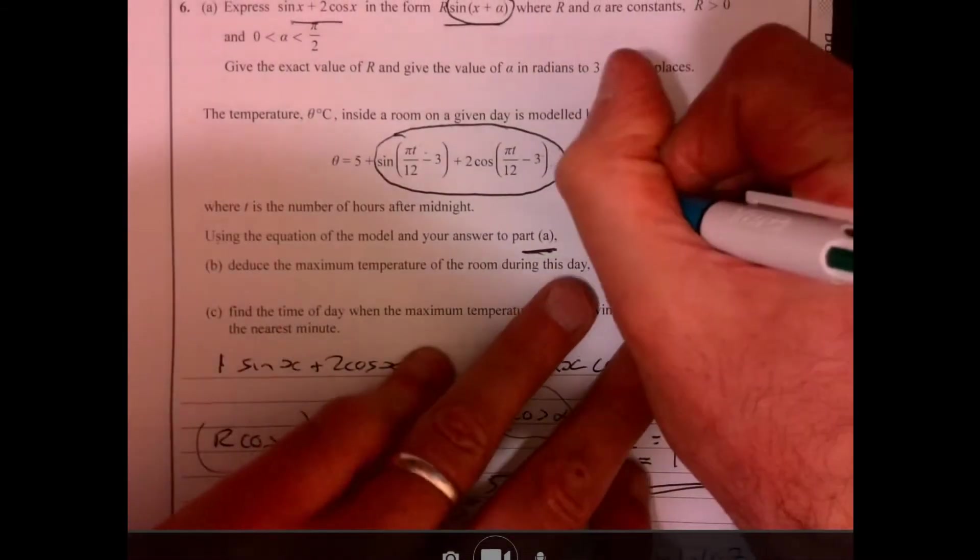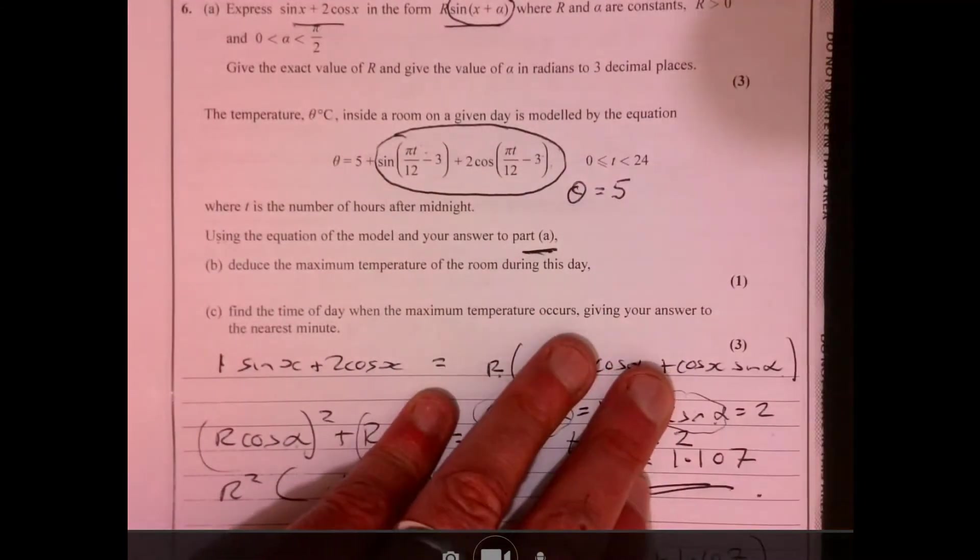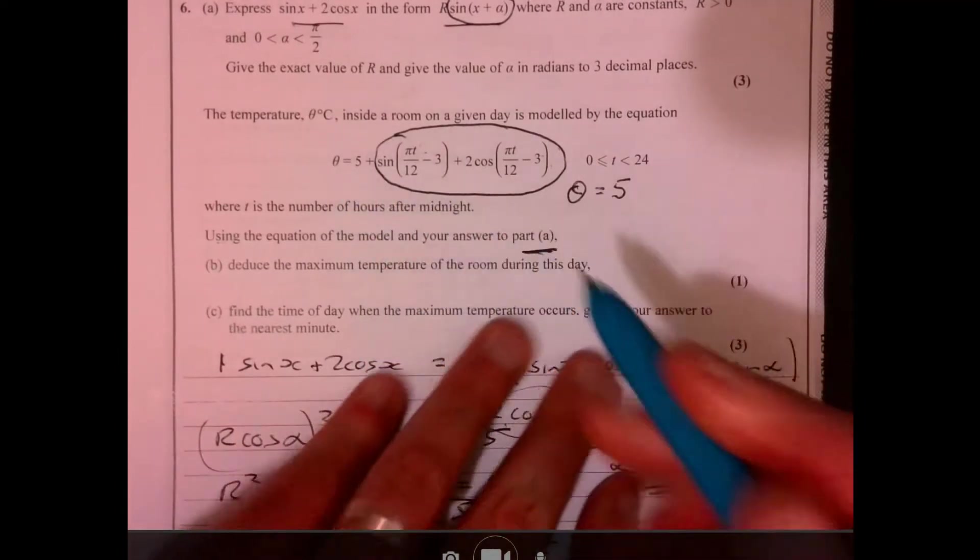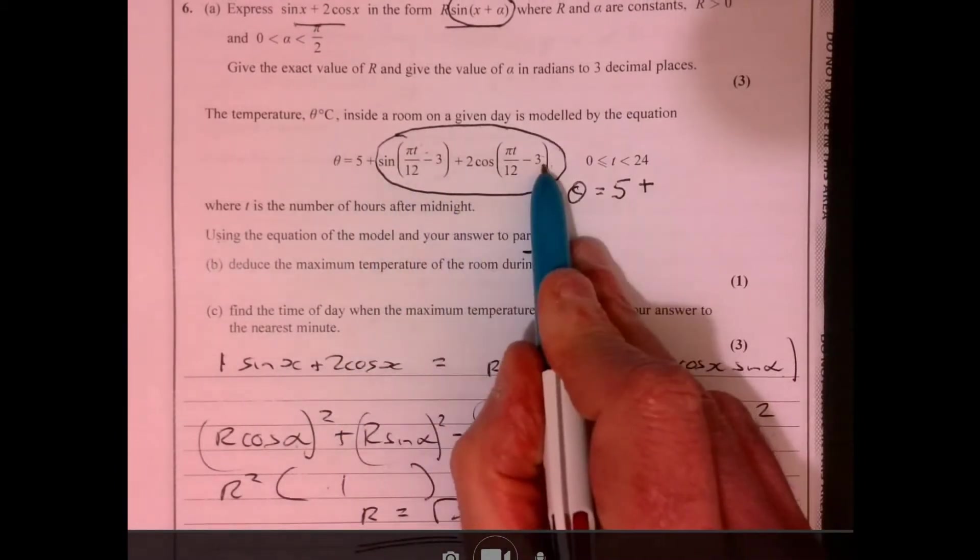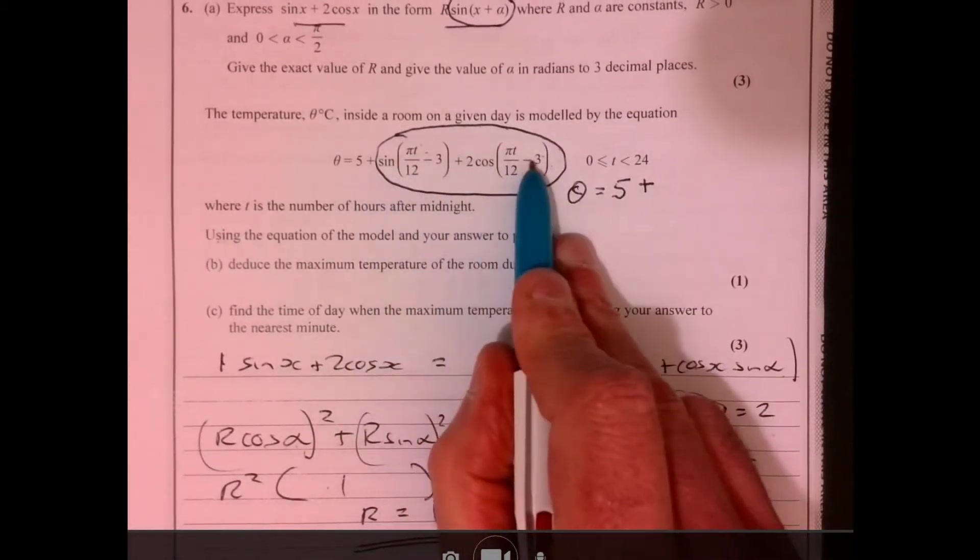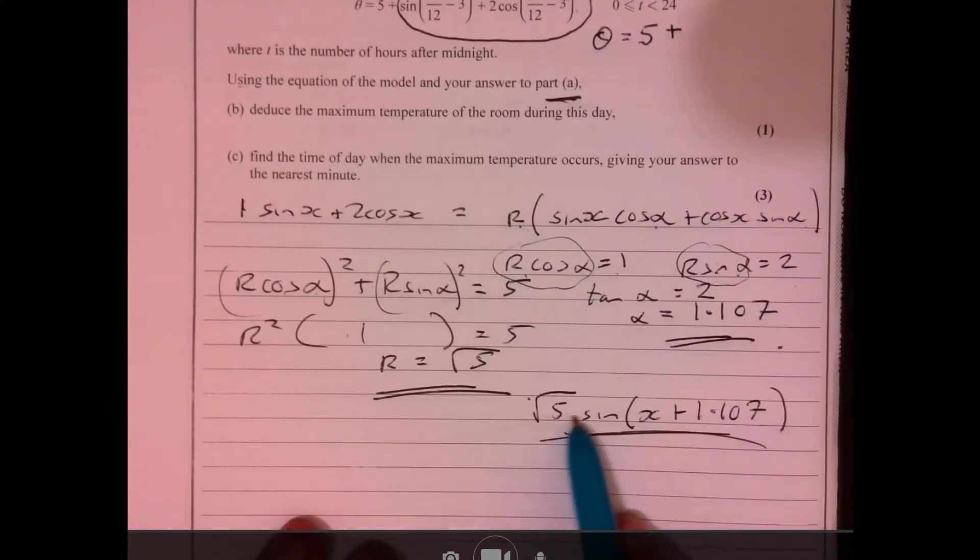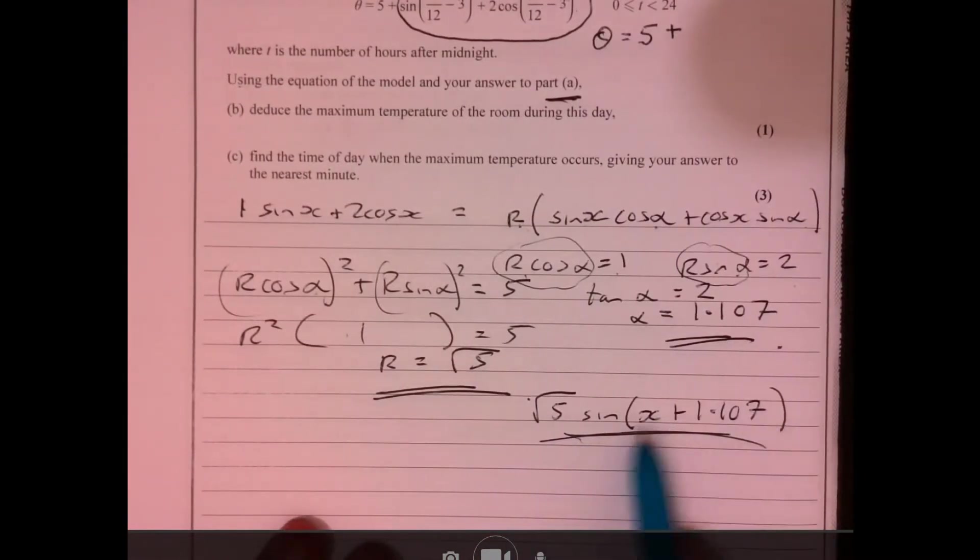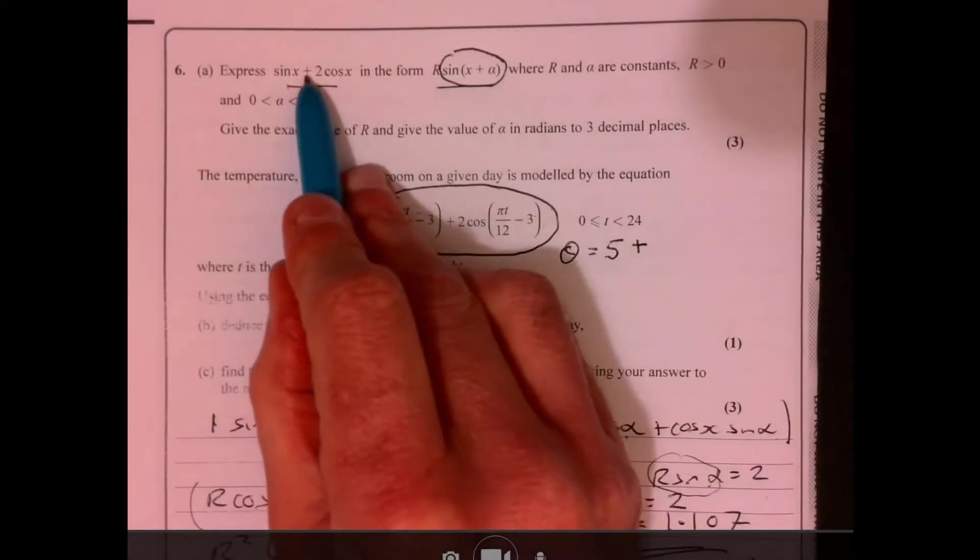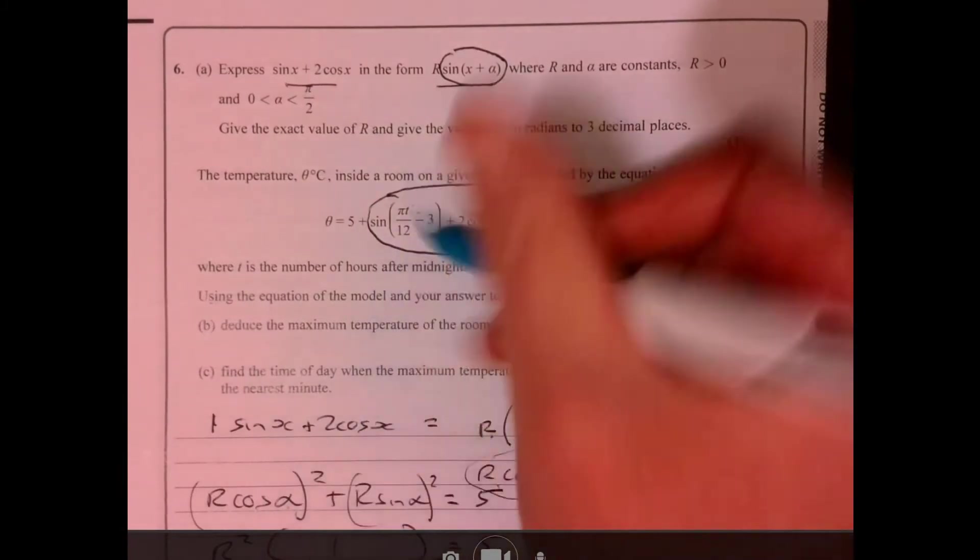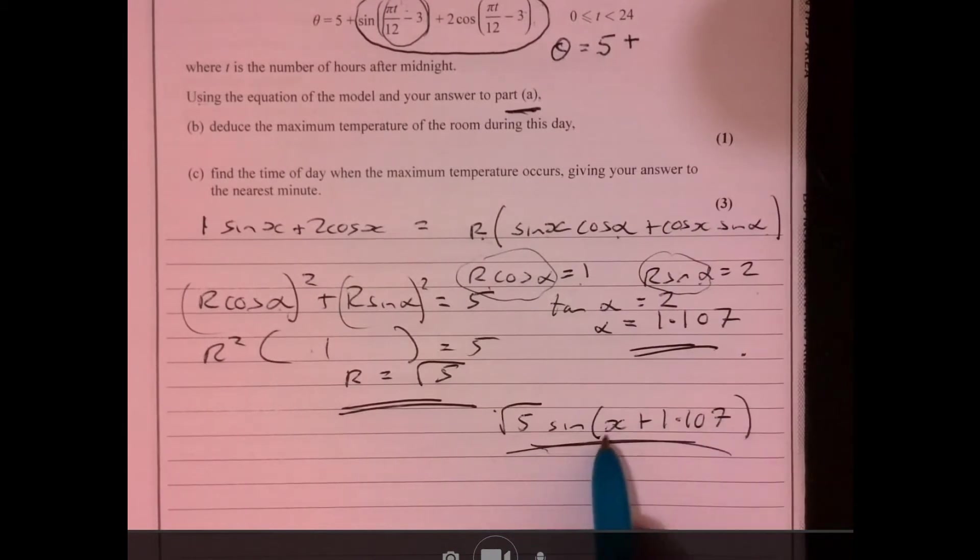Let me rewrite what we've got just here so you can see. We're talking about the temperature, aren't we? So we've got five plus, and we've just shown that we can rewrite that. The x bit is just that bit there. Compare this to what we've got here. This part here is x.